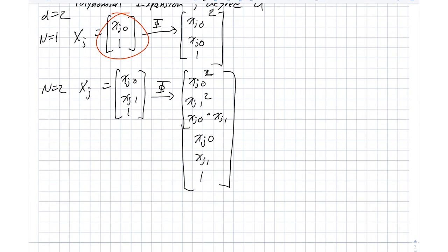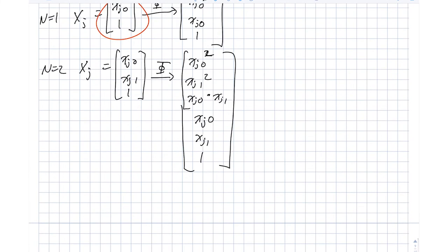Now we can keep going with this. We can move on to n equals 3 if you care to. I'll leave that as an exercise for you. But we still end up with all the quadratic terms, all the linear terms, and the constant term. If d becomes 3, then this phi produces not only the quadratic, linear, and constant terms, but it also produces the cubic terms.